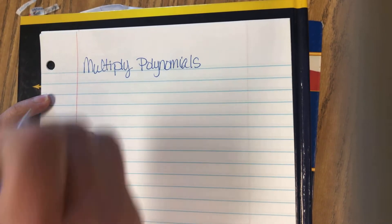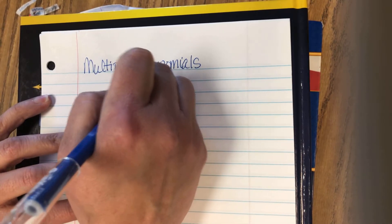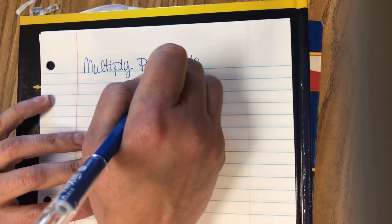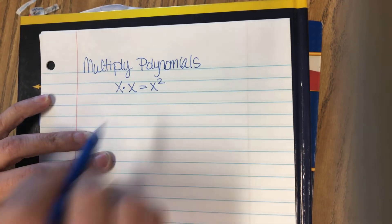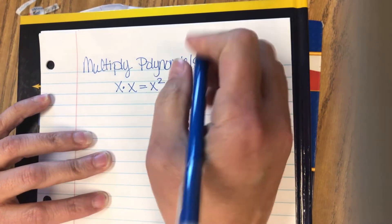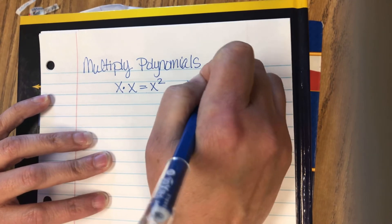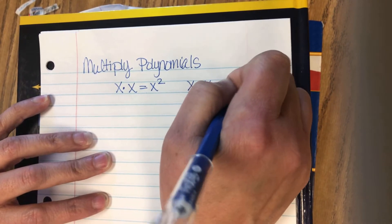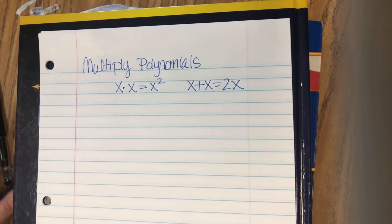So multiply polynomials, the big thing that you have to remember here is that when you do x times x, you get x squared. x plus x is 2x. It's important that you keep those two things straight so that you know the difference.